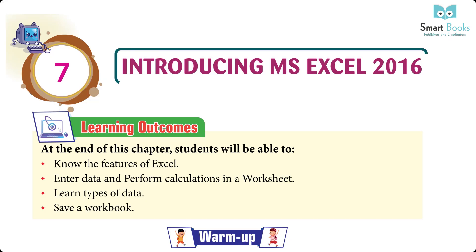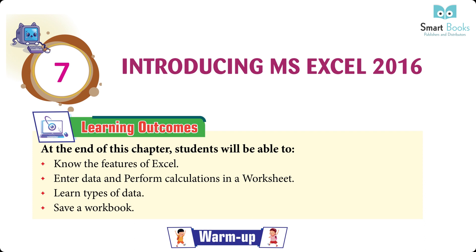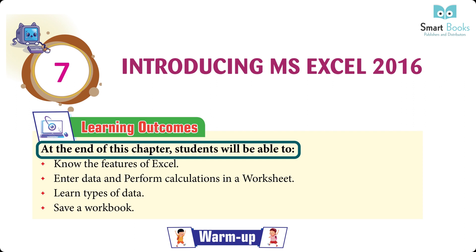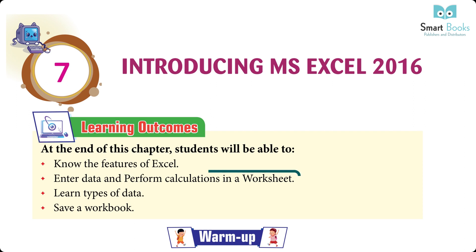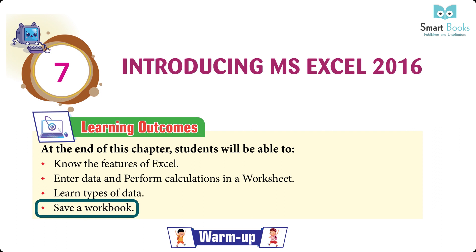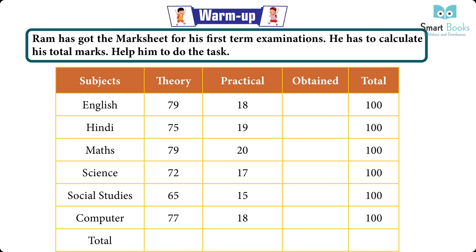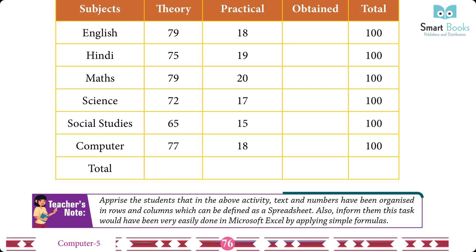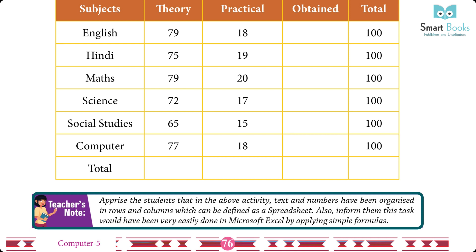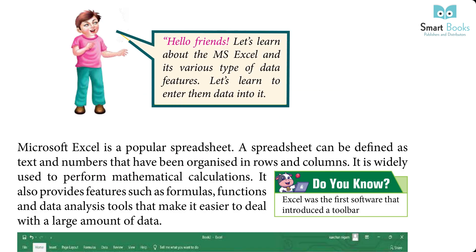Chapter 7: Introducing MS Excel 2016. Learning outcomes: at the end of this chapter, students will be able to know the features of Excel, enter data and perform calculations in a worksheet, and learn types of data and how to save a workbook. Warm-up: Ram has got the mark sheet of his first term examination and has to calculate his total marks. Students are informed that text and numbers organized in rows and columns define a spreadsheet, and this task can be easily done in Microsoft Excel by applying simple formulas.